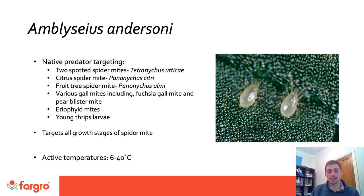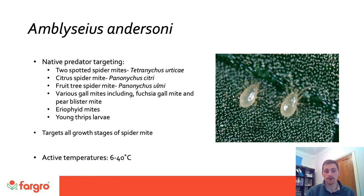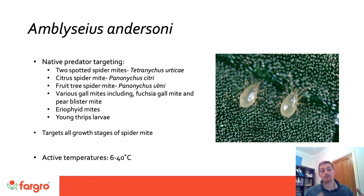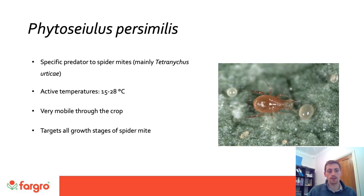Amblyseius andersoni is a generalist predator — it covers a range of different spider mite species including various gall mites and even young thrips. It has a preferred diet of spider mites but will also feed on pollen and fungal spores. So if there is low pest pressure in the crop it can change its diet to sustain itself through the colder months, and then move towards targeting spider mites when they become readily available. They're very good for targeting the smaller micro colonies and they target all growth stages of spider mites.